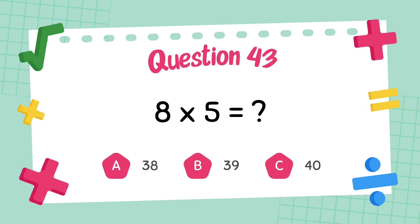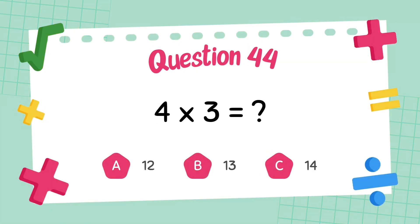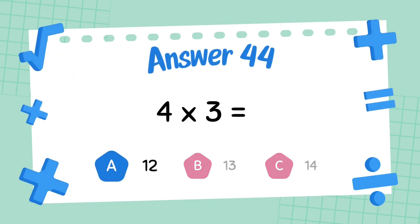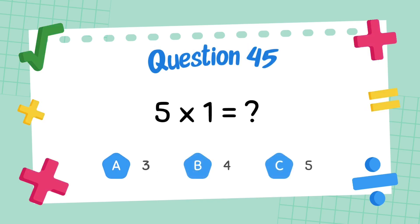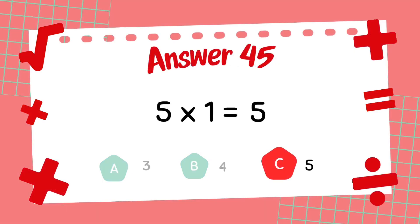What is 7 multiply 5? The answer is 5. What is 5 multiply 5? The answer is 4. What is 4 multiply 3? The answer is 5.